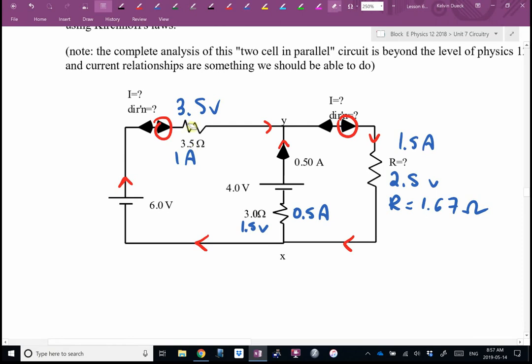Did we find everything? By the way, now I can find the power usage, the power usage, the power usage. Oh, I forgot to fill in this I equals and this I equals. There is a little spot right there. So I'll say 1 amp and 1.5 amps. I did circle the directions.